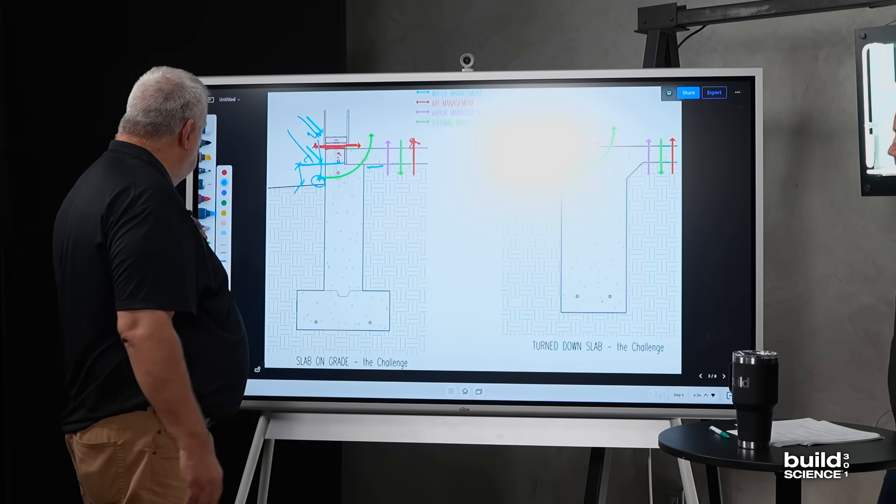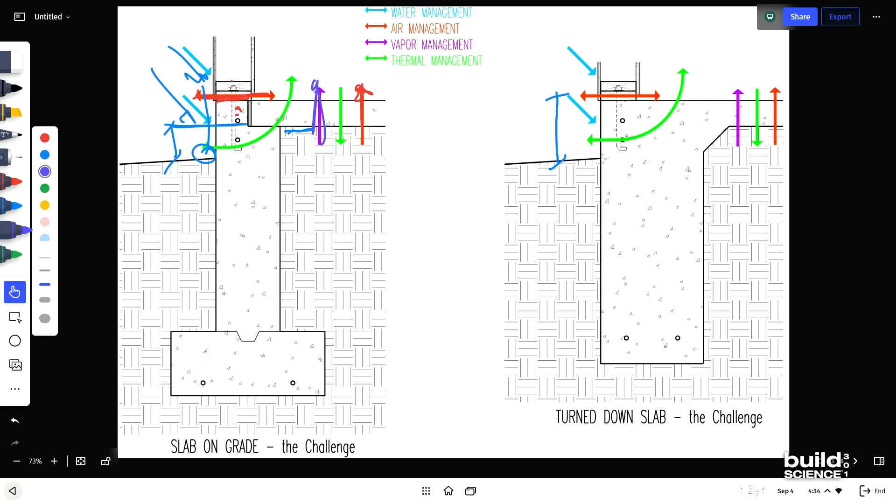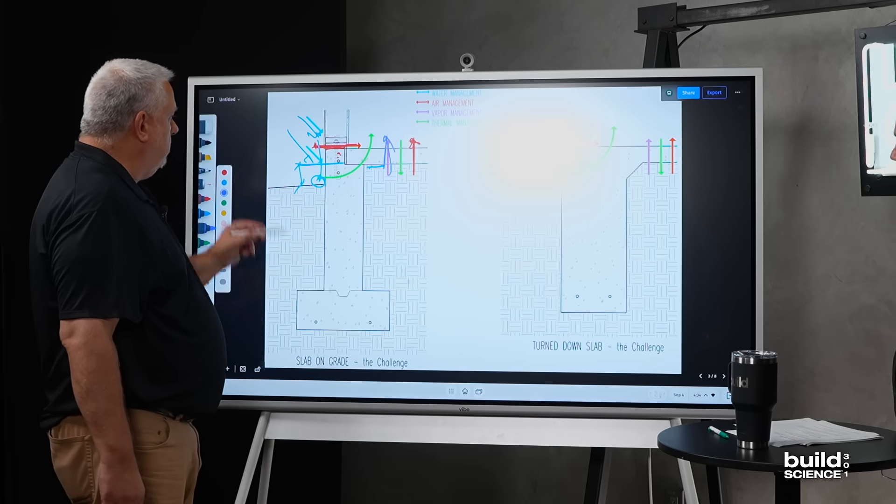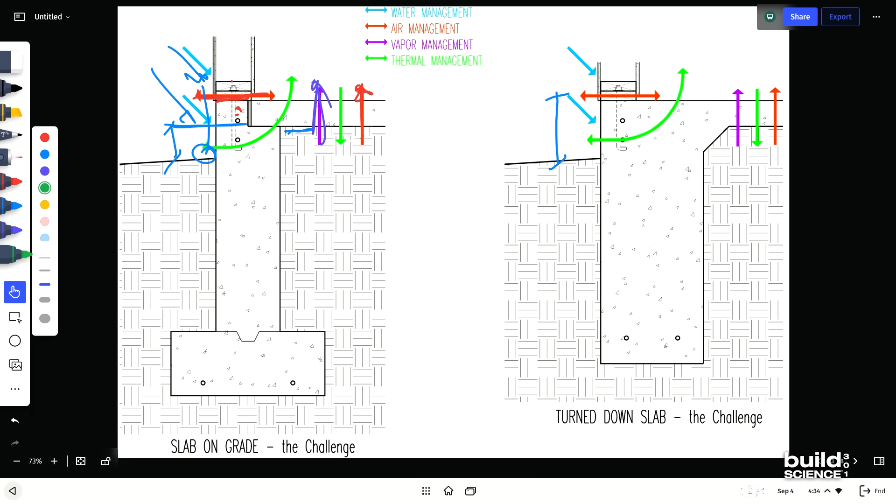Vapor management, right? Going up through the slab and up through the slab there. These are virtually the same. That's just monolithic pour three. And then, of course, thermal management, insulation.